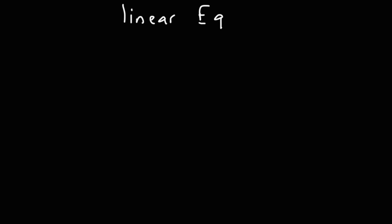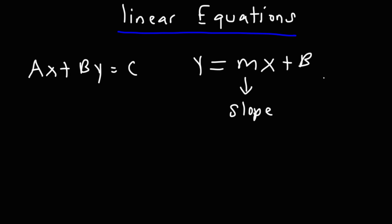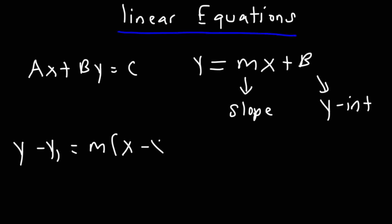Now let's talk about linear equations, a very common topic in algebra. There are three forms in which you can write a linear equation. The first is standard form: ax plus by equals c. The next is slope-intercept form: y equals mx plus b, where m is the slope and b is the y-intercept. And then there's point-slope form: y minus y1 equals m times (x minus x1). Those are the three common forms for writing linear equations.